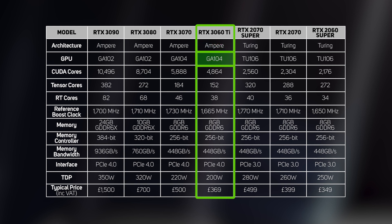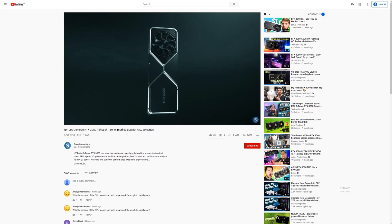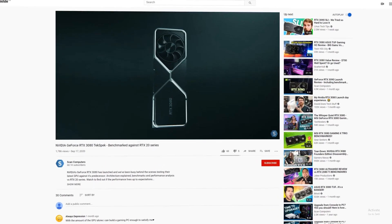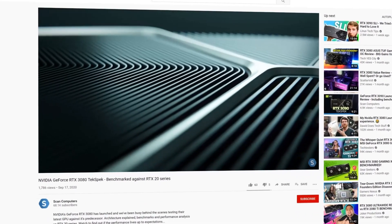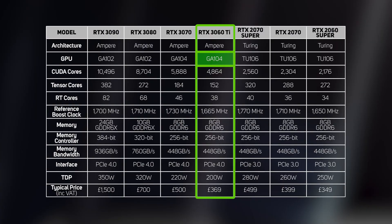For an in-depth look at the Ampere architecture, please watch our original video on the RTX 3080. The most notable difference is that the GA104 uses standard GDDR6 memory, instead of the fancy-pants GDDR6X that the GA102 uses.